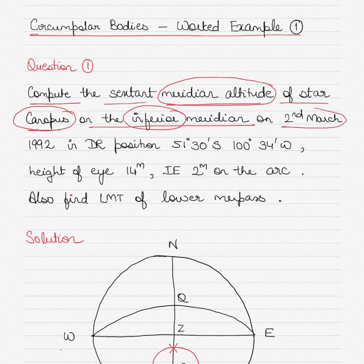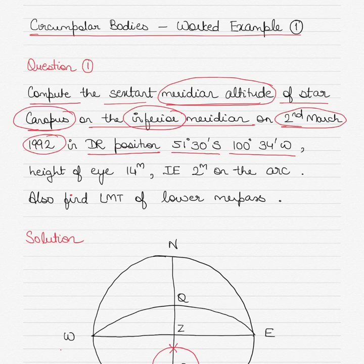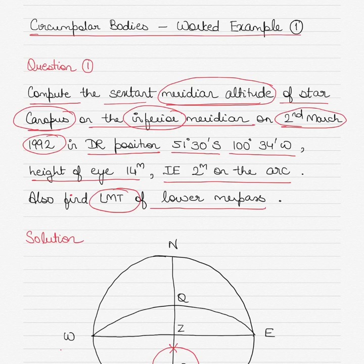The date is 2nd of March 1992, so you would need the nautical almanac for 1992. If you don't have access to it, just look at the method I use and apply the same method with the almanac of your choice. The ship's DR position is 51° 30' South and 100° 34' West, meaning we are in the southern hemisphere, so diagrams must be drawn with reference to the southern hemisphere. Height of eye is 14 meters, index error is 2 minutes on the arc, and we also need to find the LMT of the lower meridian passage of Canopus.